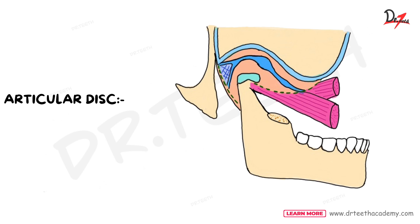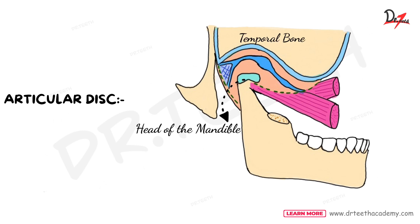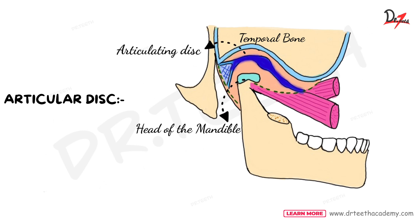Now let's discuss the articular disc. Here we have the head of the mandible, the temporal bone, and between the two articulating surfaces we have this disc. The articular disc divides the joint into an upper and a lower compartment. The upper compartment permits gliding movement, and the lower compartment allows rotary as well as gliding movement.